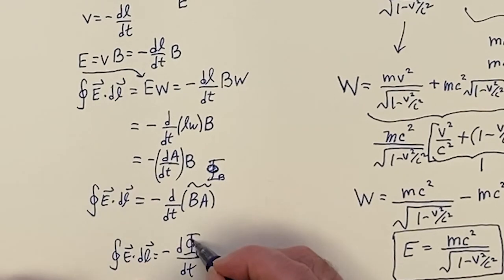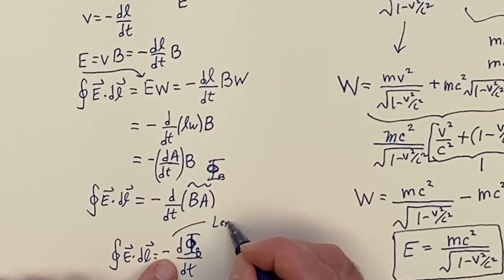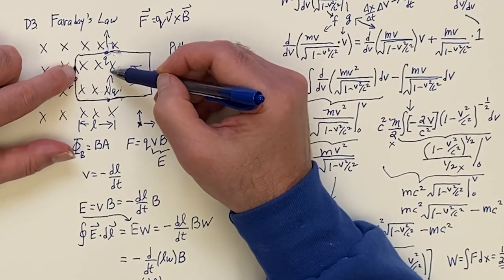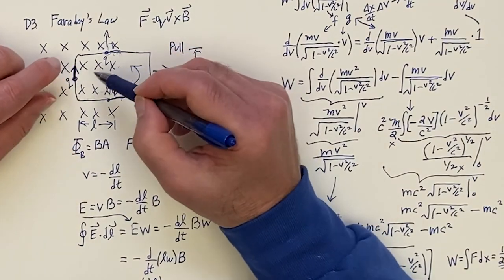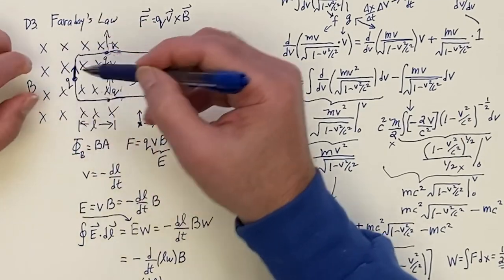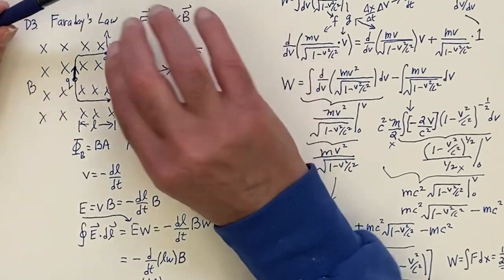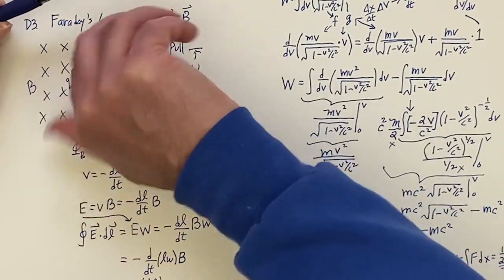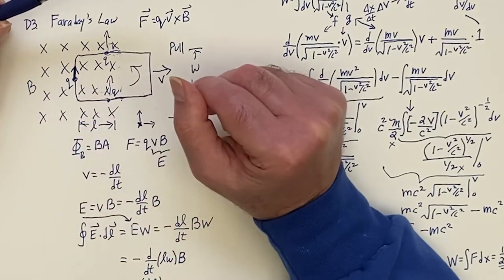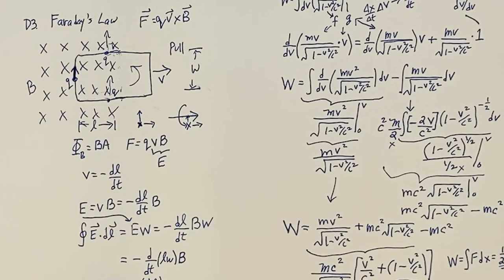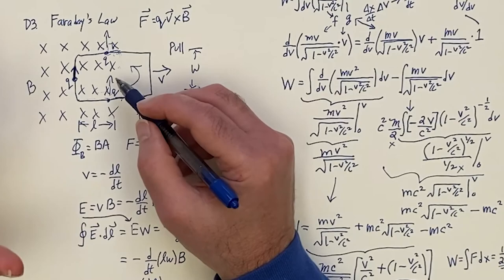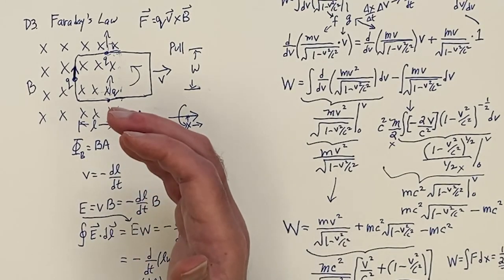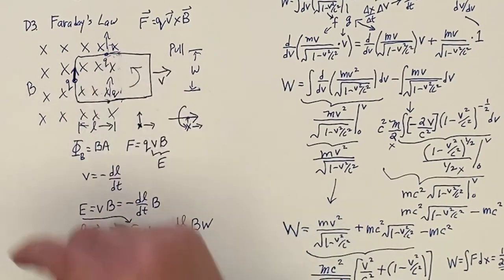Faraday's Law: E dot dL equals minus the derivative of magnetic flux. The minus sign is explained by Lenz's Law — if the flux is decreasing into the page, nature generates a current to oppose that, creating a magnetic field to increase the flux back. Nature always opposes you: if you decrease magnetic flux, a current sets up to increase it; if you increase the flux, a current opposes it.